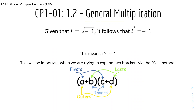From the last few videos, we can see that i equals the square root of negative 1. That means that i squared equals negative 1, because we're just squaring both sides. So essentially, this means that i times i equals minus 1. This will be important when expanding two brackets containing i using the FOIL method — first, outers, inners, and last — to expand brackets.